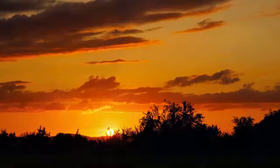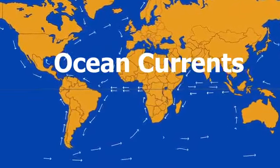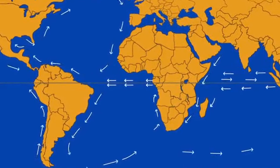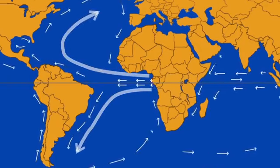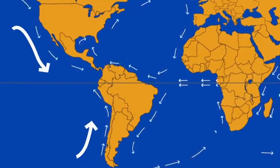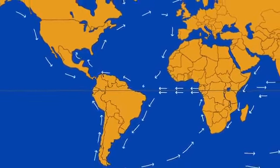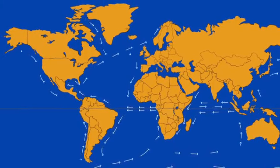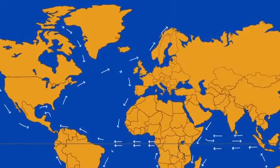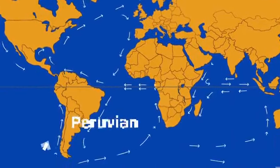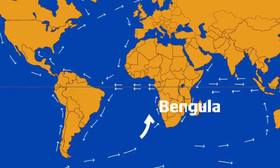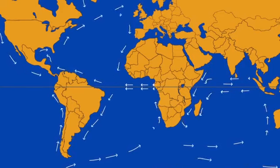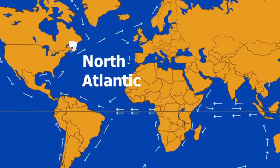The next factor is ocean currents. Ocean currents are large masses of surface water that circulate in regular patterns around the ocean. Warm currents move from the equator towards the poles, and cold currents move from the poles towards the equator. Any coastal area with warm or cold currents flowing past it will be warmed or cooled if the winds are onshore. Examples of cold currents are the Labrador current, Peruvian current, and Benguela current. Examples of warm currents are the Brazilian current and the North Atlantic Drift.